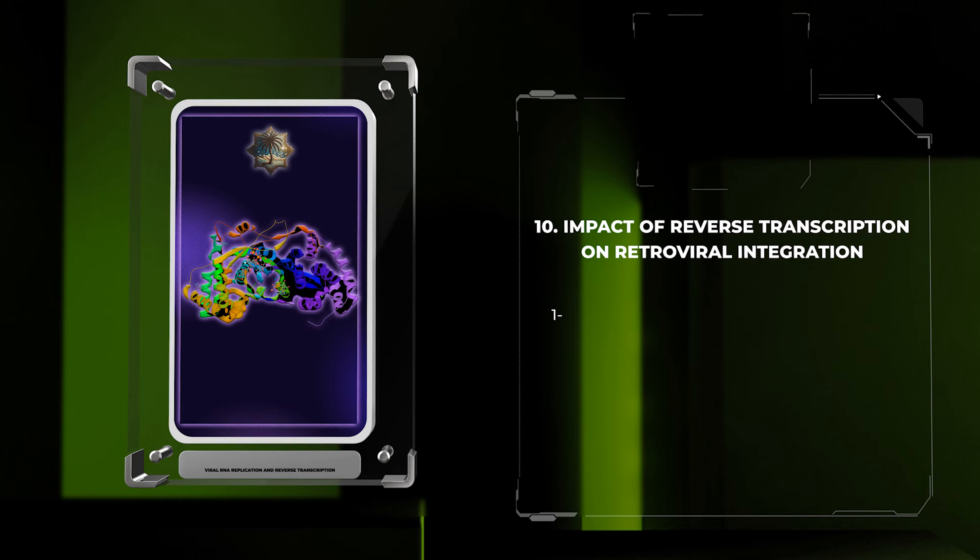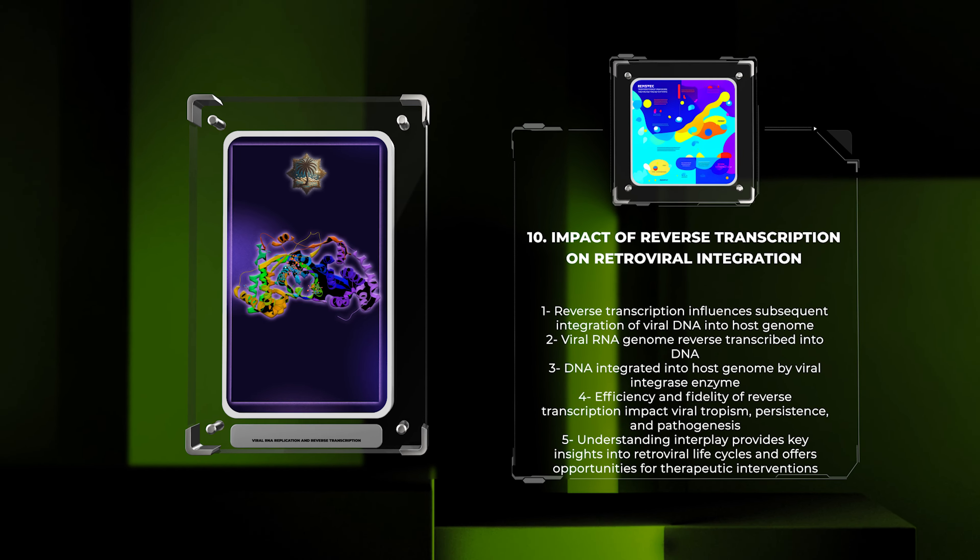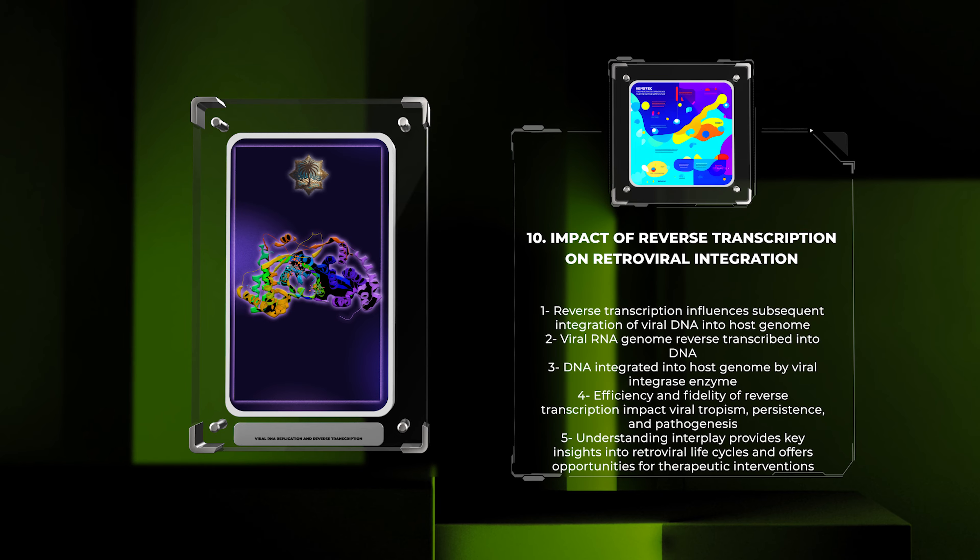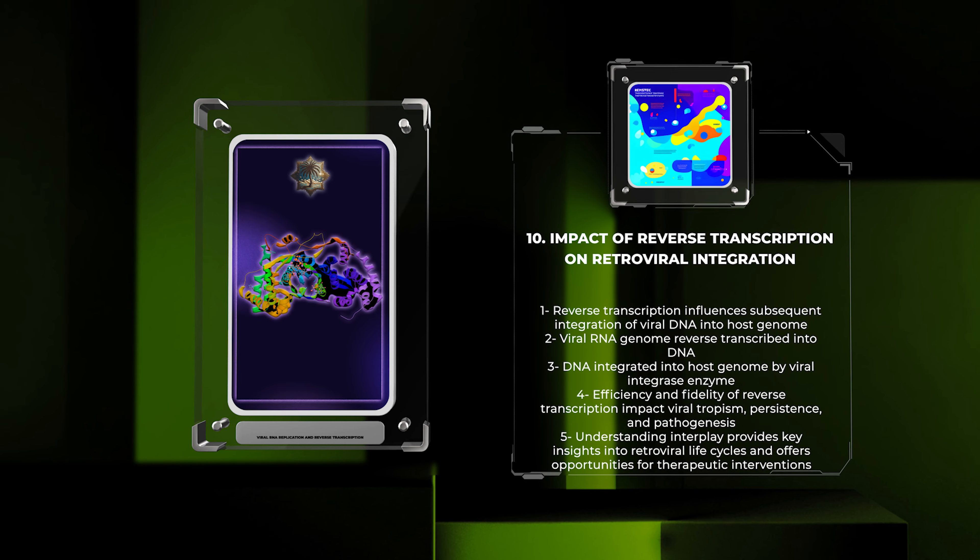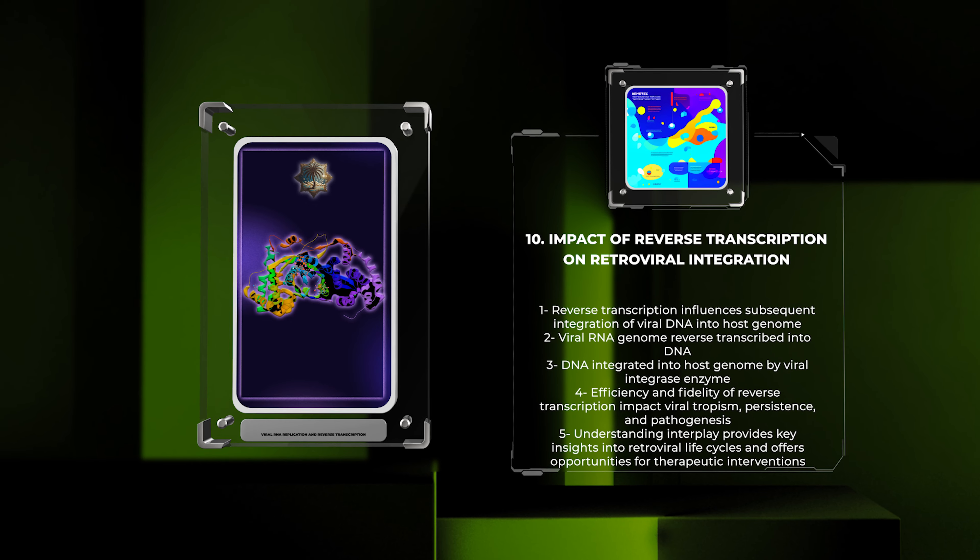Reverse transcription, a hallmark of retroviral replication, directly influences the subsequent integration of viral DNA into the host genome. During reverse transcription, the viral RNA genome is reverse transcribed into DNA, which is subsequently integrated into the host genome by the viral integrase enzyme.